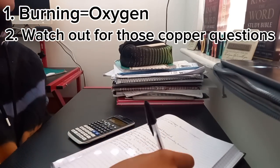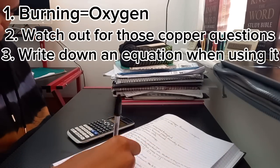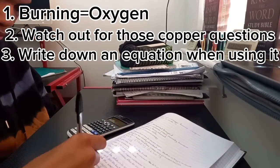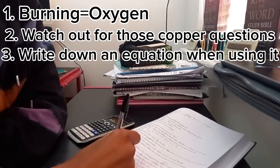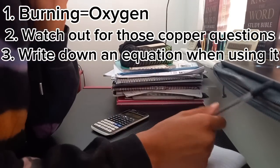Thirdly, when you're using an equation in the chemistry exam, make sure you write down the equation triangle on the side of the paper so that you don't accidentally make a mistake and do the wrong calculation and always use the right calculation for that question.